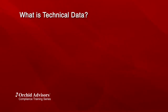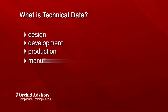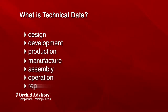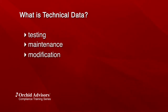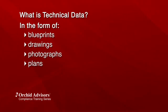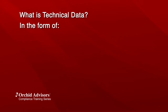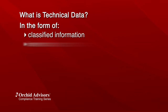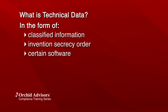What is technical data? Technical data is a term of art defined at ITAR Section 120.10. It means information required for the design, development, production, manufacture, assembly, operation, repair, testing, maintenance, or modification of defense articles. Technical data includes information in the form of blueprints, drawings, photographs, plans, instructions, or documentation. Technical data also includes classified information relating to defense articles or defense services, information covered by an invention secrecy order, and certain software directly related to defense articles.